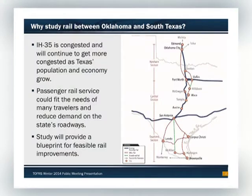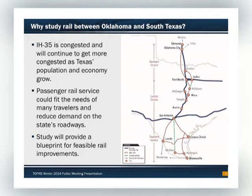Just going to give you a little background. Why are we studying this corridor? Congestion is not as big a deal down here in the Valley, but it is up between Austin and San Antonio. Congestion is going to become a problem — there's a thousand people a day moving to Texas. We need other means to move people around efficiently. We're looking at this corridor to see if passenger rail service might be good for that, and if so, what type of service would fit best in the corridor, and to use this as a feasibility study for future rail improvements.